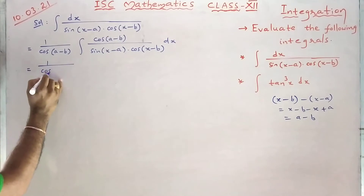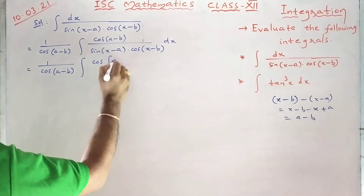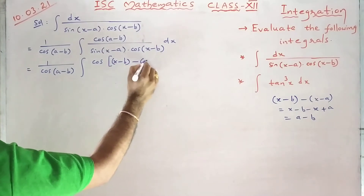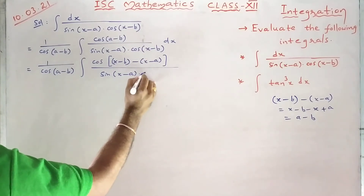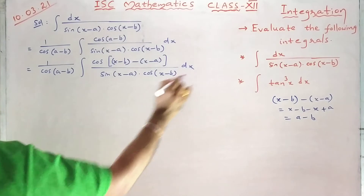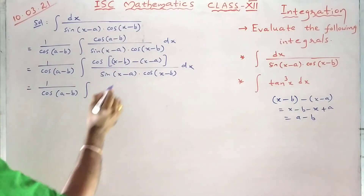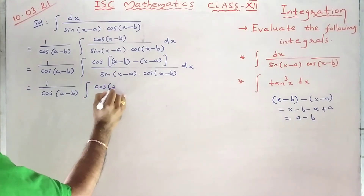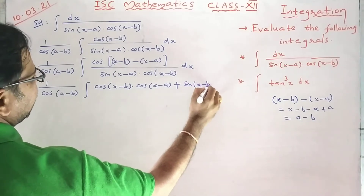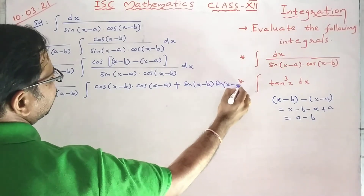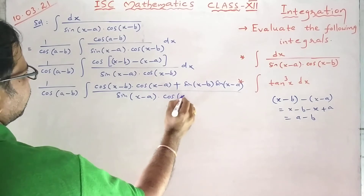So 1 by cos(a minus b) integral — cos(a minus b) can be expressed as: second term minus first term, x minus b minus x minus a, upon sin(x minus a) into cos(x minus b) dx. The formula we use is cos(a minus b) equals cos a cos b plus sin a sin b, placed over sin(x minus a) cos(x minus b).